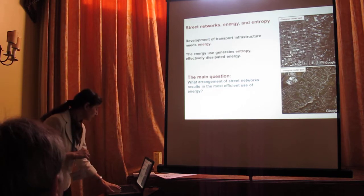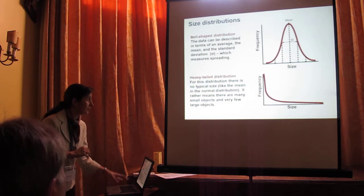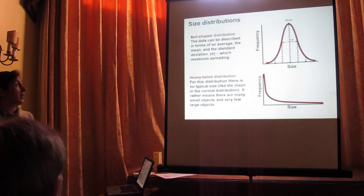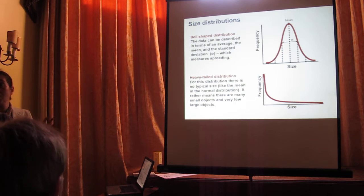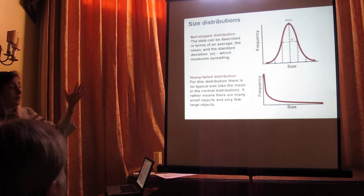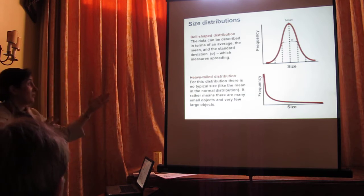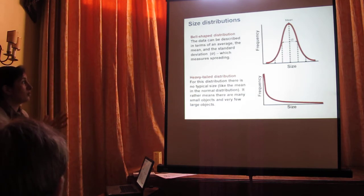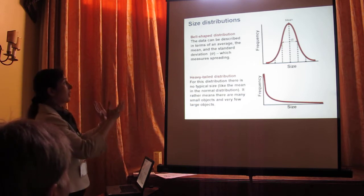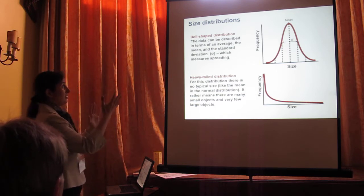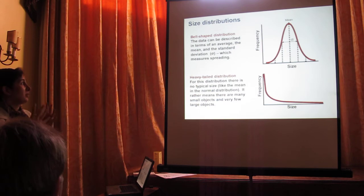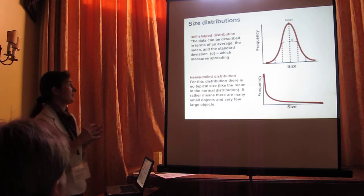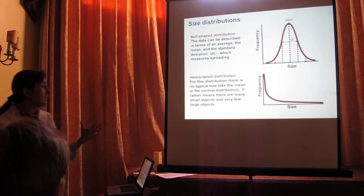One way to do that is through statistical distributions. I look at two most common statistical distributions. The first is a bell-shaped or normal distribution, which we can describe based on the mean value and also the standard deviation as the measure of spreading.